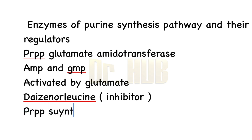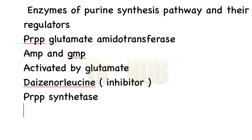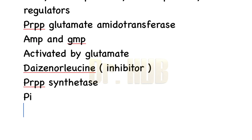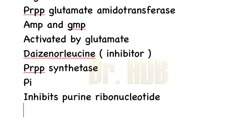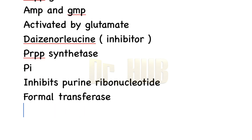Next we look at PRPP synthetase. PRPP synthetase is activated by inorganic phosphate (Pi) and is inhibited by purine ribonucleotides.